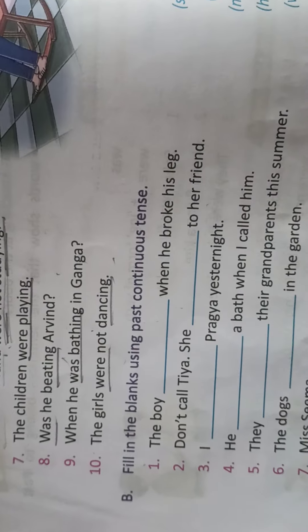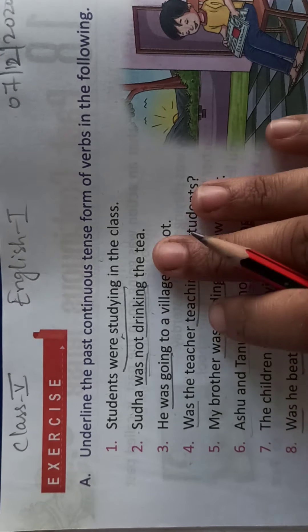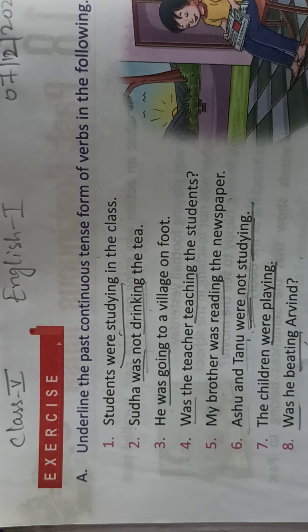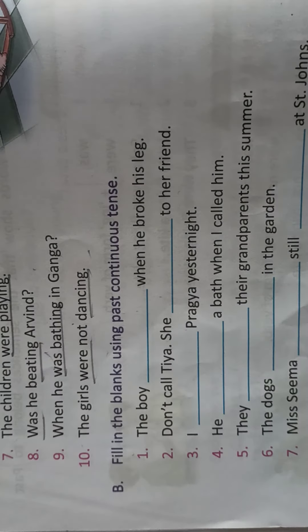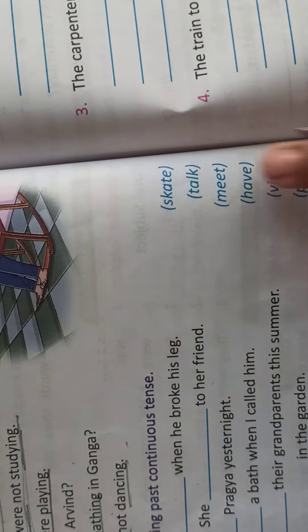Now come to the next exercise: fill in the blanks using past continuous tense. In the first exercise you had to underline, and in the second exercise you have to fill in the past continuous tense form. The verb is given; you look at that verb and form the answer.